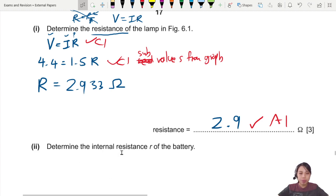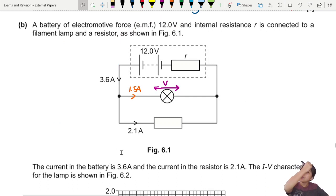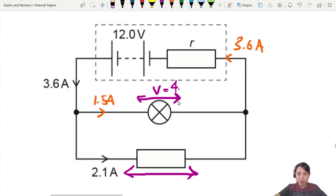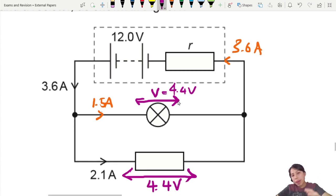Next, determine the internal resistance of the battery. Where do we start? We want to find internal resistance of the battery. We know the current flowing through the battery, which is 3.6. Something to note is that this V is 4.4, right? So we don't know where to start. Let's just write out all the information we know. Here's 4.4 volts. And because the lamp and the resistor are parallel to each other, here 4.4 volts. Down here also parallel, so also 4.4 volts. Which also means that the battery is supplying 4.4 volts.